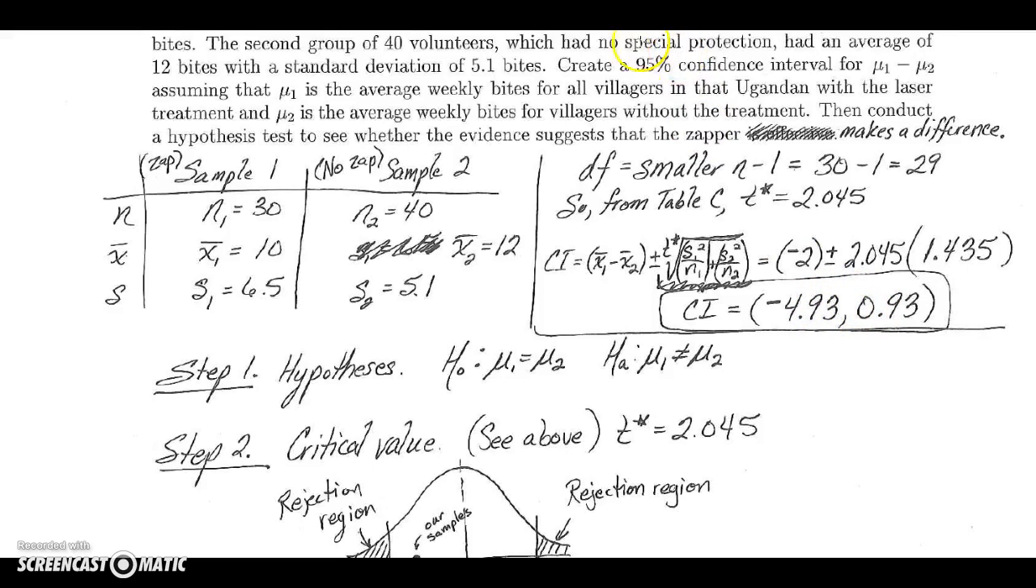So because zero is inside this interval, we wouldn't be able to reject the null hypothesis at the 95% confidence level. But at the same time you can also see that our best guess is that it does drop the count by negative two. So we may continue researching this. Certainly if it was a severe problem, which malaria is, this would show promise even though we technically did not reject the null hypothesis there.